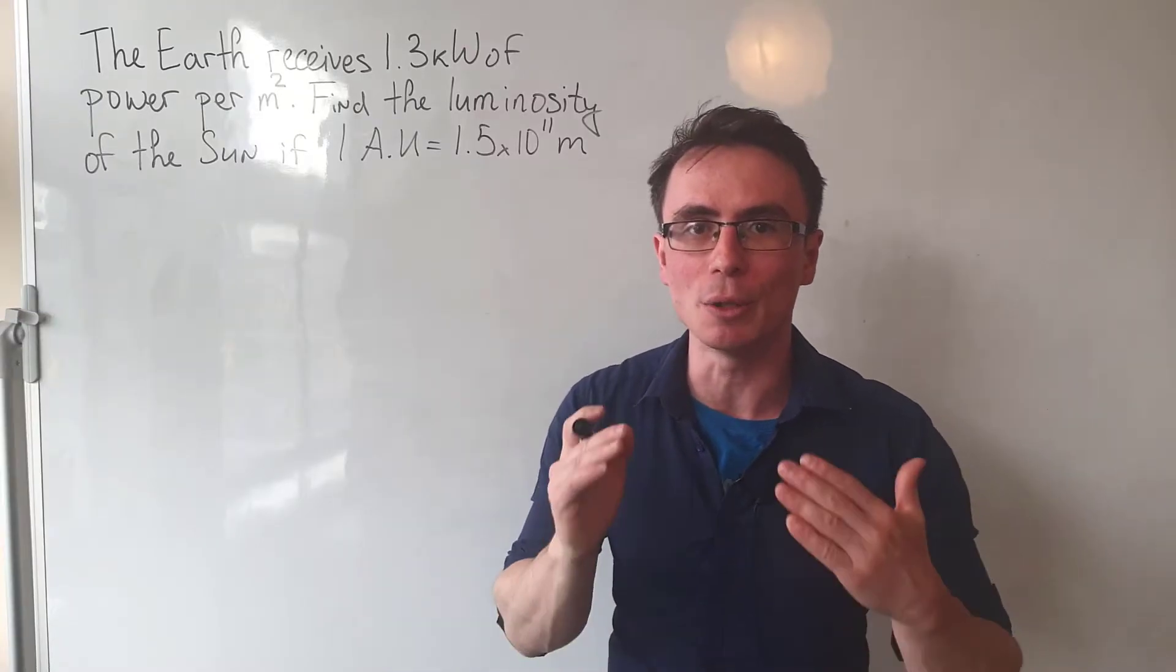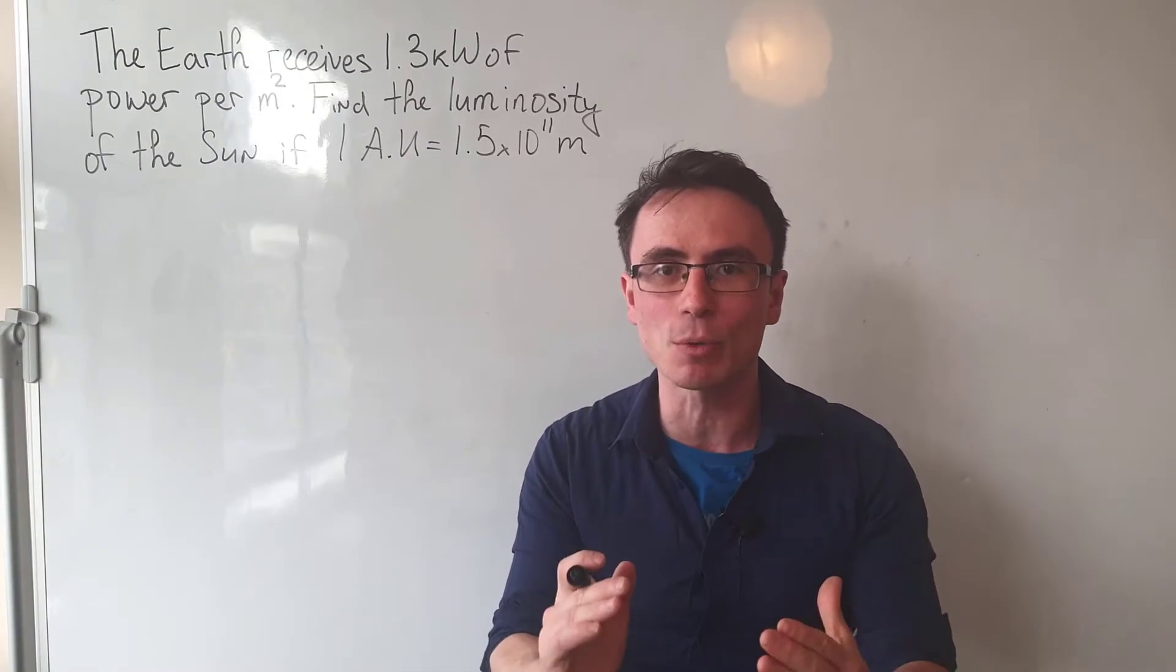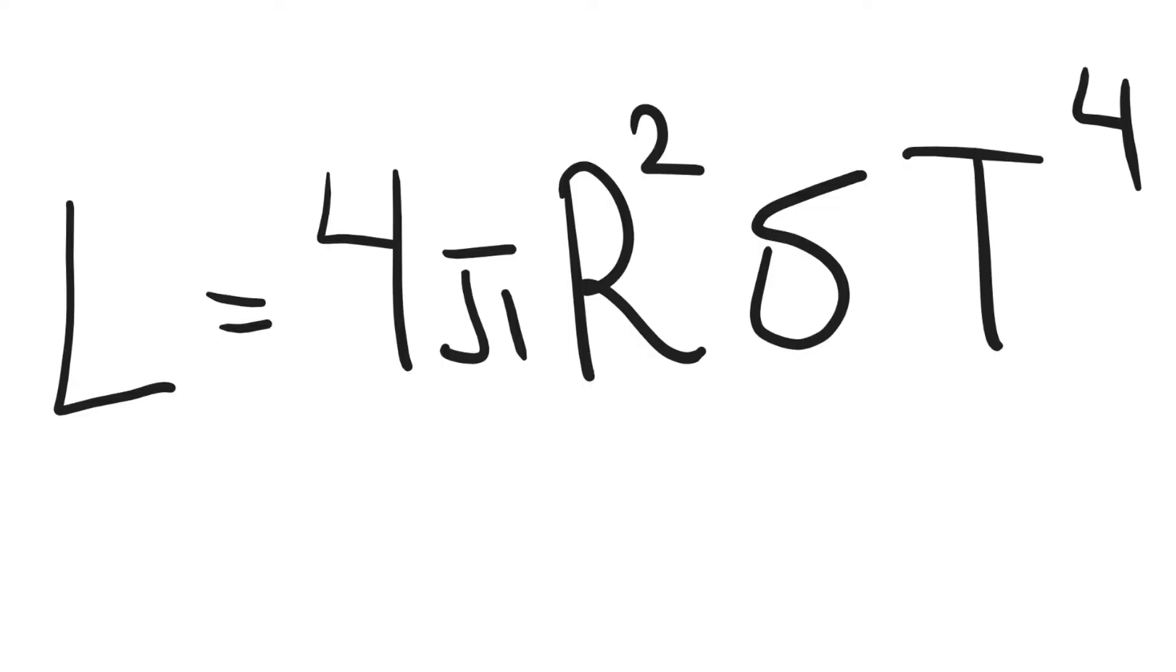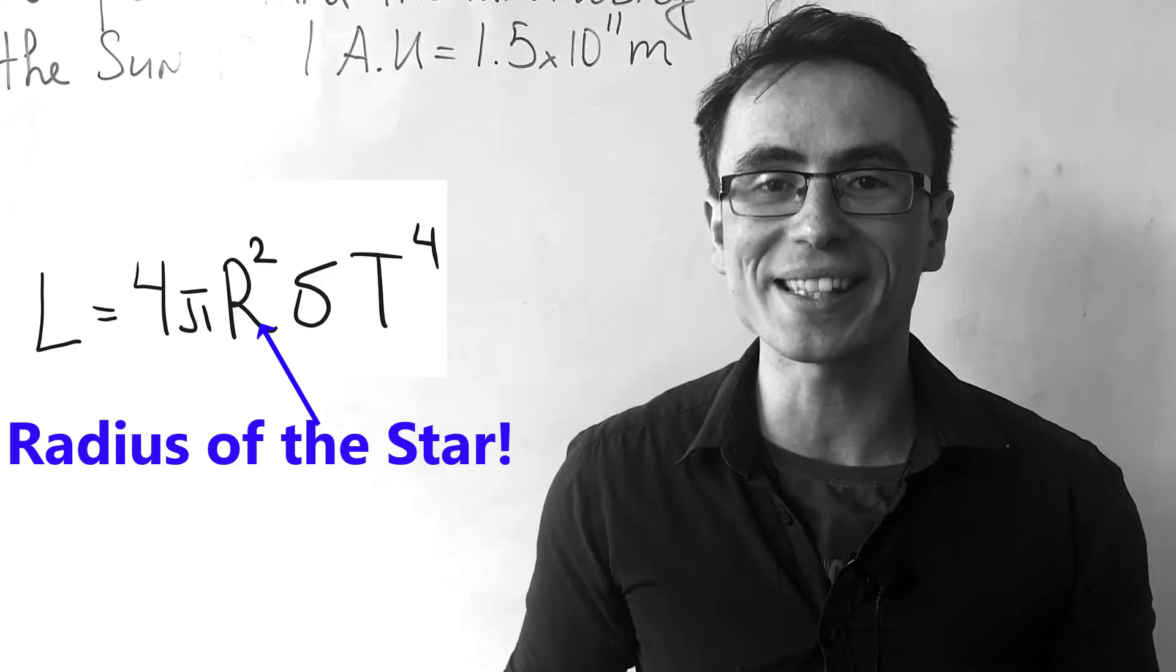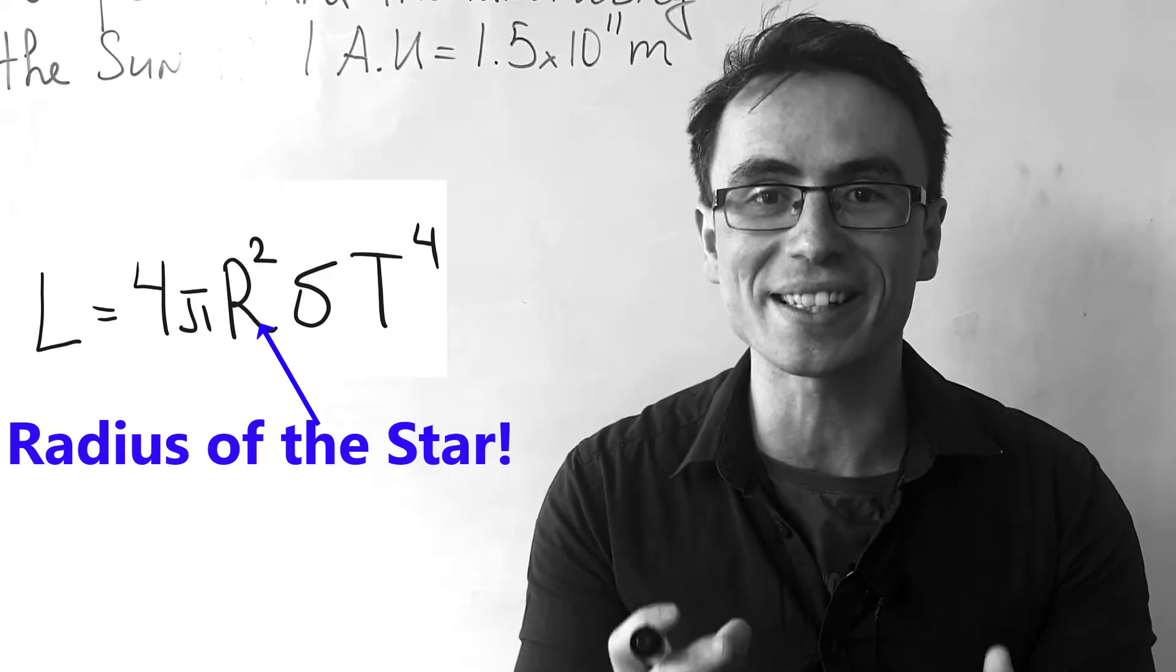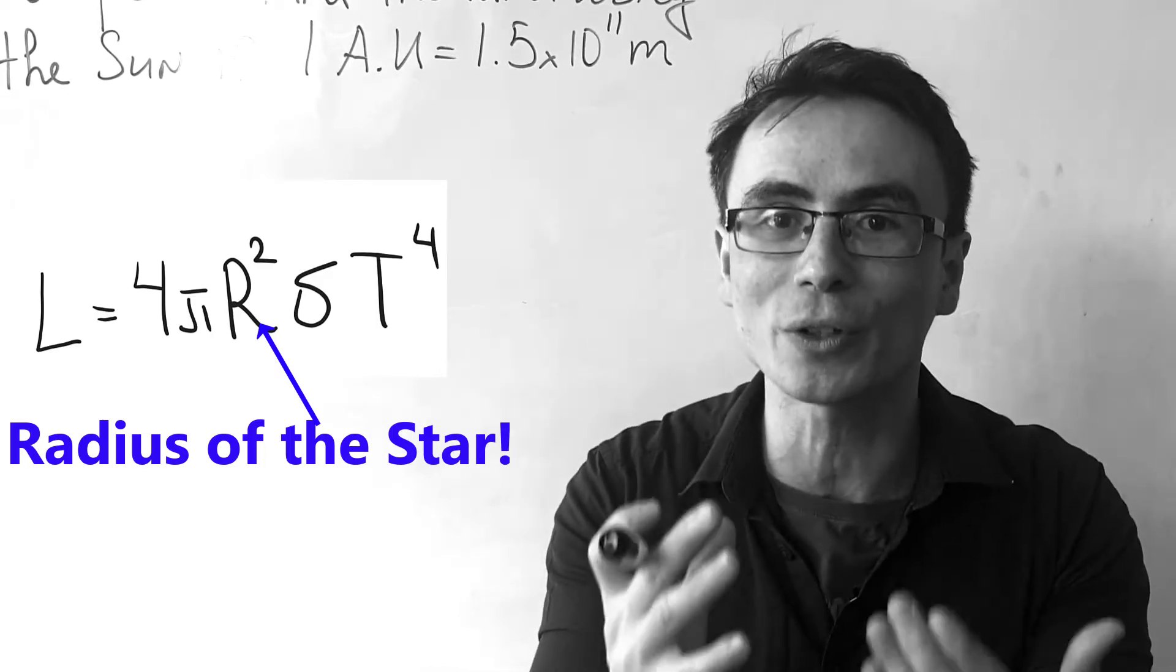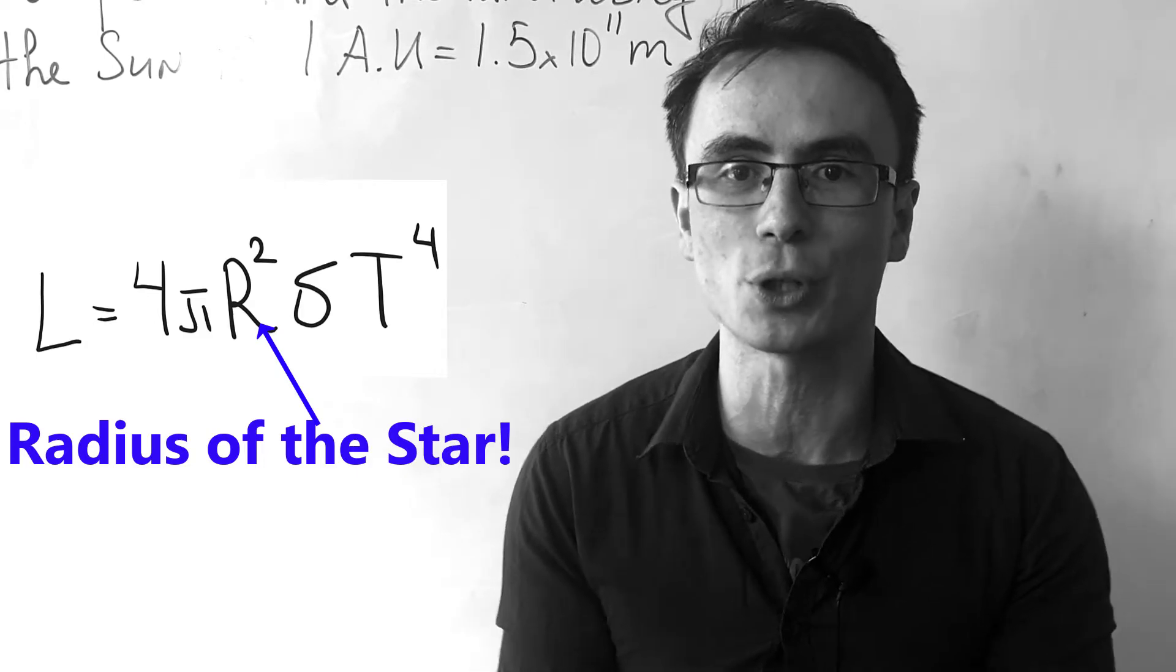Typically, whenever we read the word luminosity, the first equation that springs to mind is Stefan-Boltzmann's law. However, in this equation r stands for the radius of the star, which we are not given, and we're also not given the temperature.